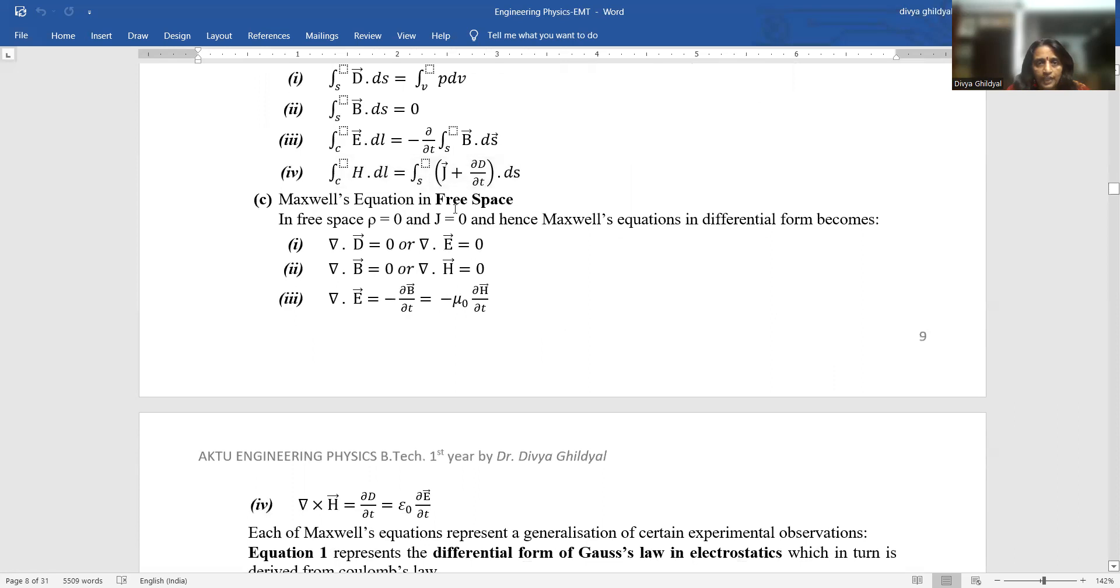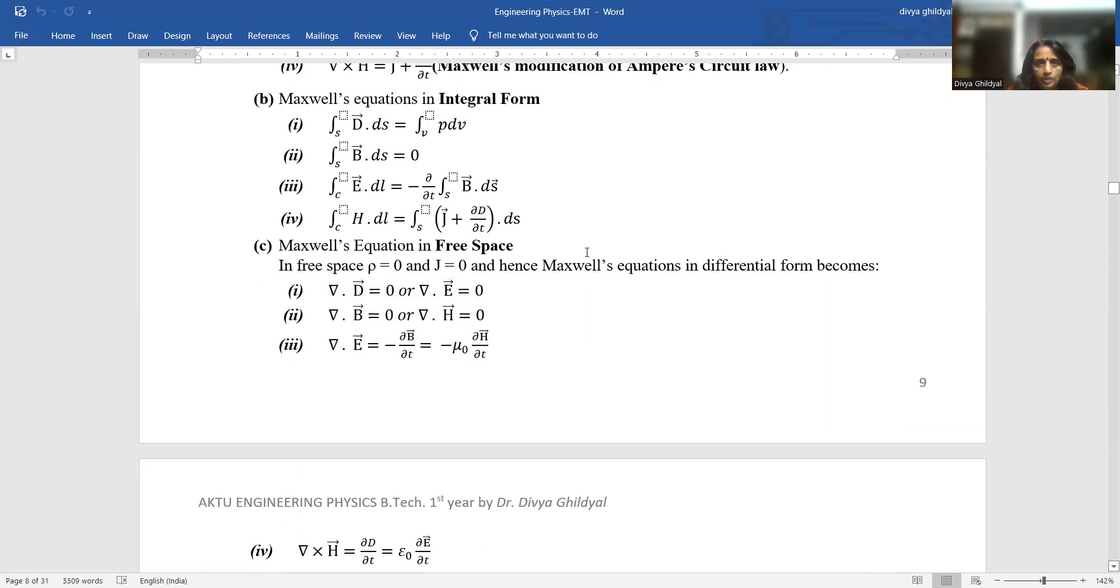Now, Maxwell's equation in free space. Firstly, comfort yourself with the word free space. Free space means no charges present around. That means it is totally lying in a free space. So when no charges are there, your charge density becomes zero - rho equal to zero - and rho equal to zero means J equal to zero. So Maxwell's equations in differential form then become del dot D equal to zero, del dot B - see we are putting rho equal to zero or J equal to zero in these equations.